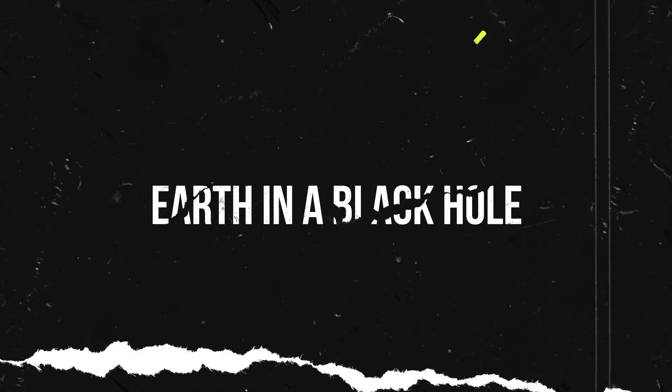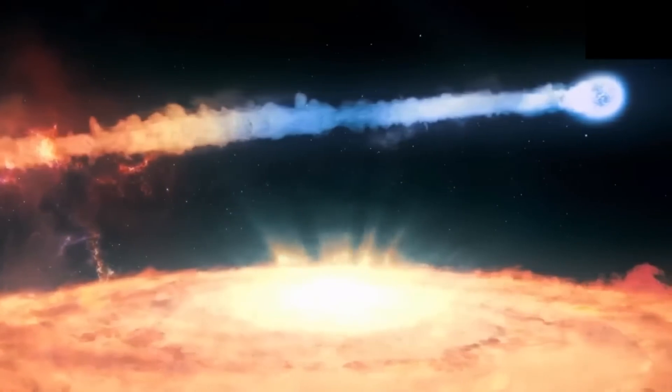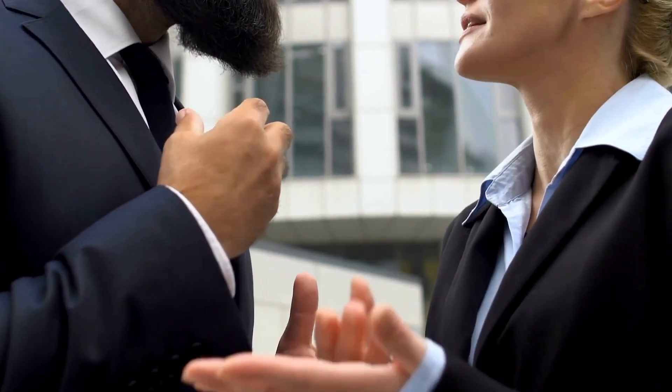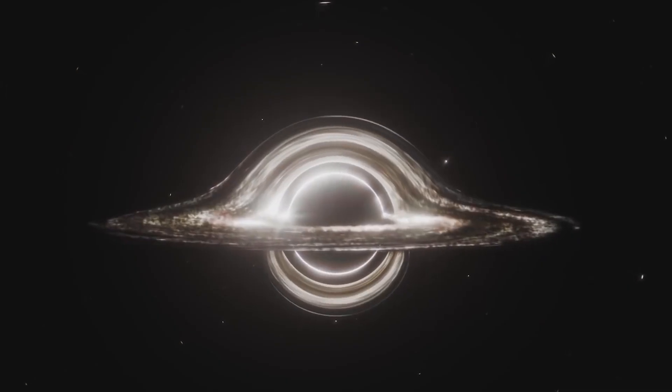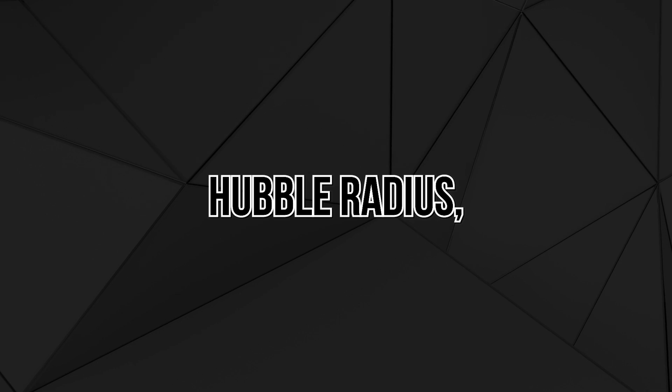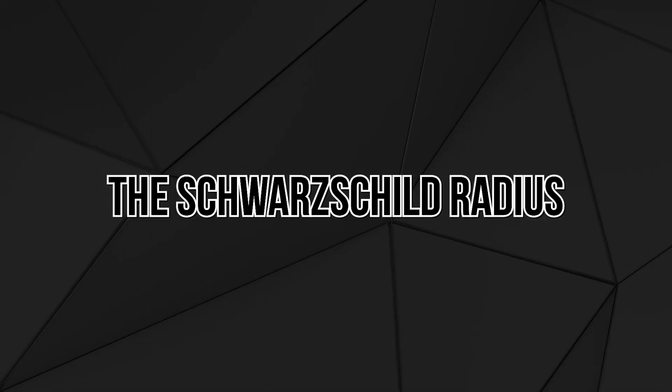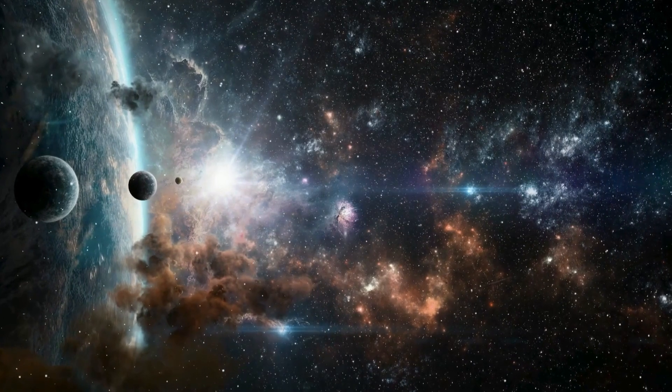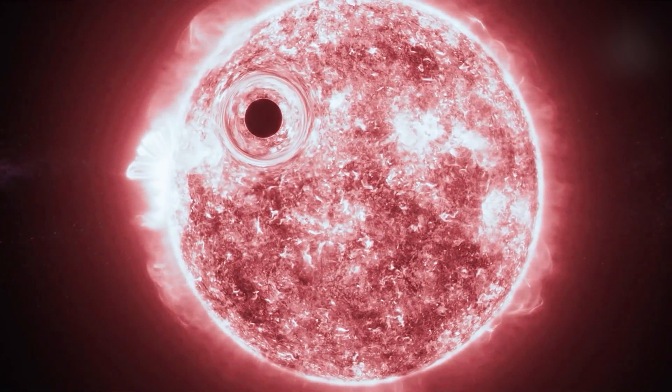Earth in a black hole. But what if we are already inside a black hole? The theory that our universe could be inside one is one of the most fascinating and controversial ideas in modern cosmology. According to this model, the observable universe corresponds to the interior of a black hole. And the Hubble radius, which defines the limits of the visible universe, coincides with the Schwarzschild radius, the boundary marking the event horizon of a black hole. This hypothesis suggests that all the mass of the universe is compressed to such a degree that it's in a state similar to the matter inside a black hole.